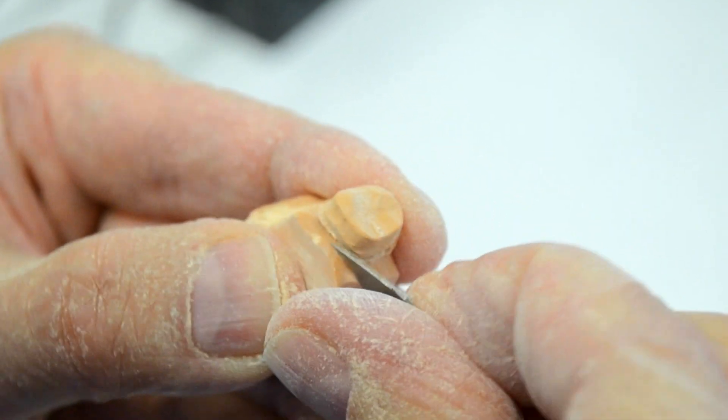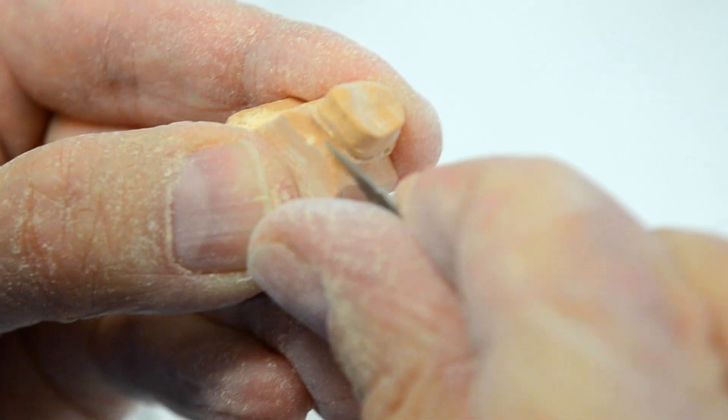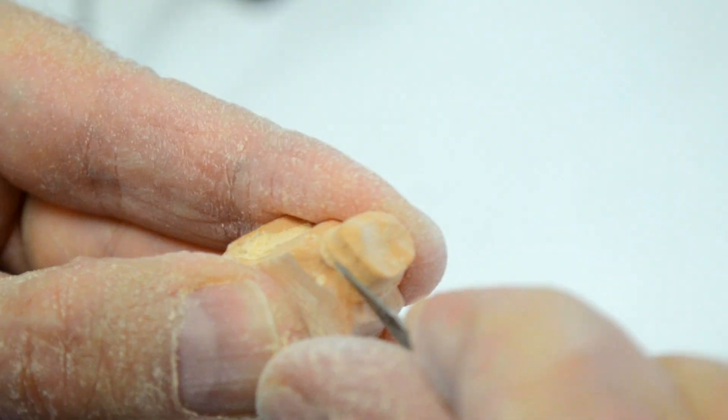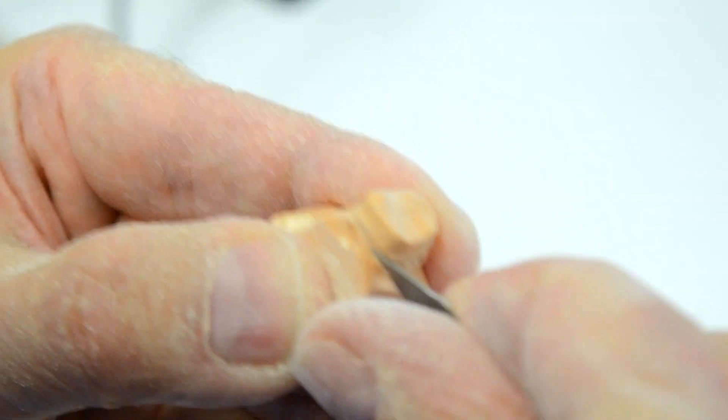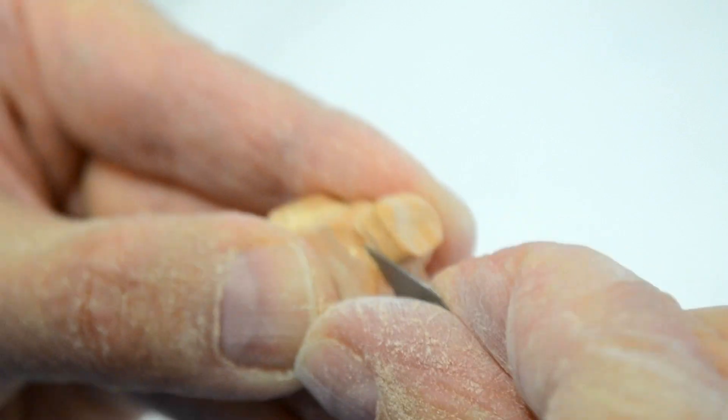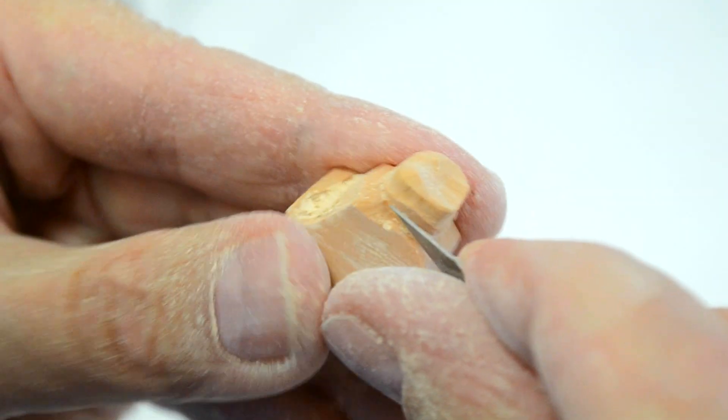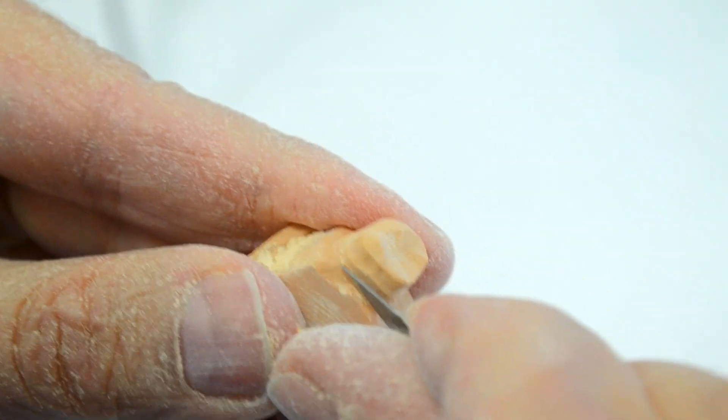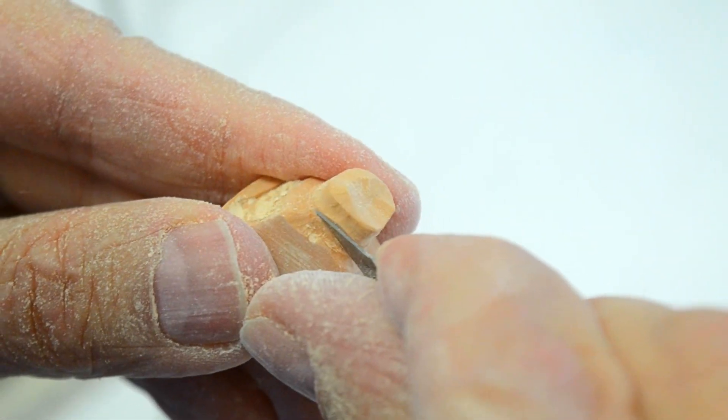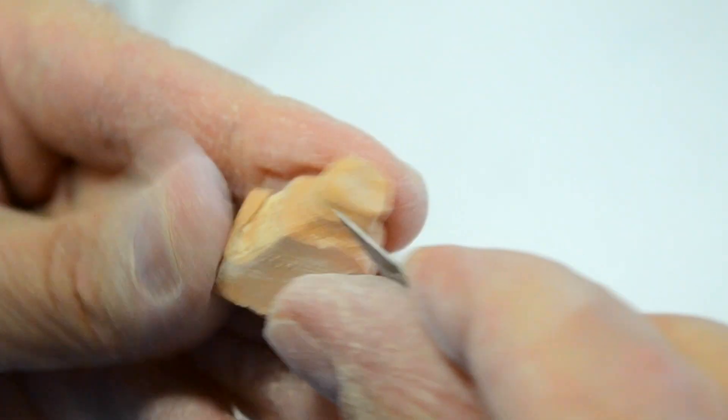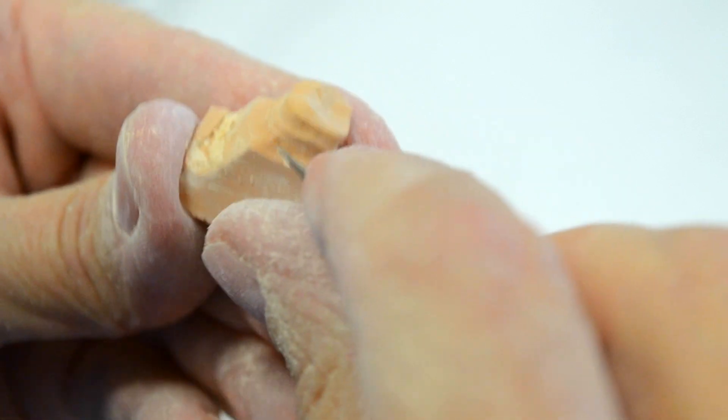Now when removing the stone, light pressure is exerted in an apical direction, just as I'm doing right now. The idea is to expose at least anywhere from three to five millimeters of finish line in your tooth preparation or external bevel if we're talking about inlays and onlays.